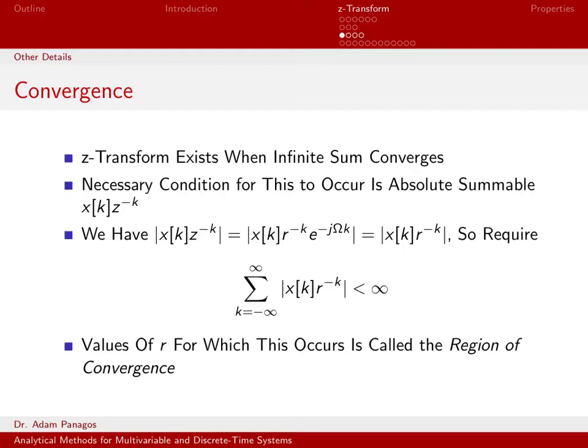The condition is when the quantity x of k times z to the negative k is absolutely summable. If that quantity is absolutely summable, then the z-transform does indeed converge or exist. So the infinite sum converges.